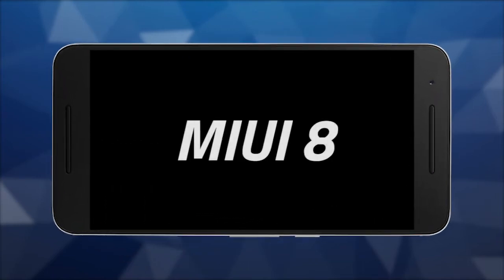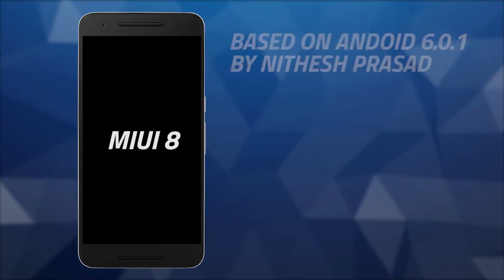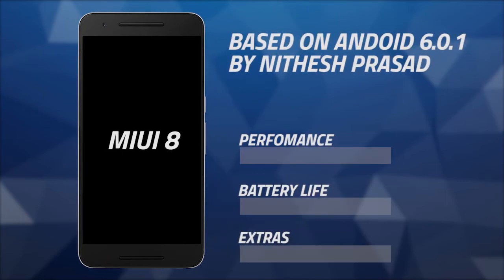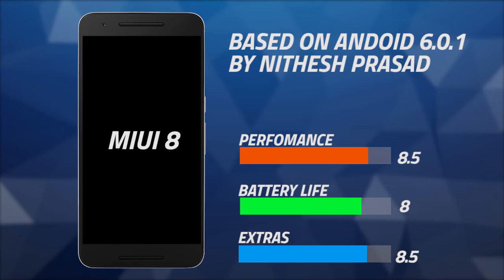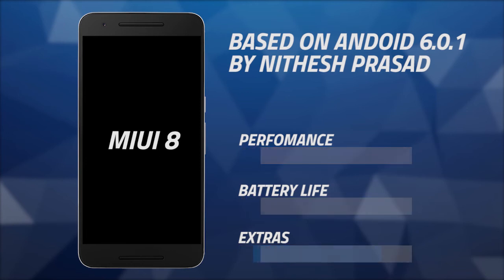The fourth ROM in the list is MIUI 8, provided in the forums by the developer. This is the only non-LineageOS based ROM in the list, and in terms of user experience it is a really different ROM. MIUI 8 comes with some nifty features — some people like it, some people don't. If you're a fan of MIUI 8 you can definitely try this ROM. It is really good in battery life and performance, and you don't have to flash any GApps as they are already included. It weighs about 797 megabytes.